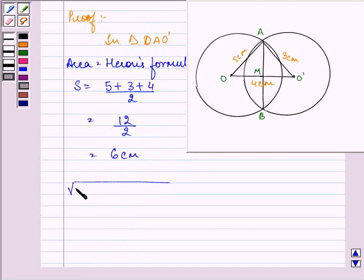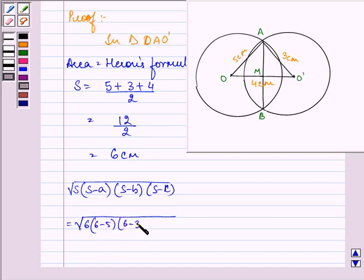Area can be found out by using the formula root of S times S minus A times S minus B times S minus C, where S we have found out to be 6 and A, B, C are the sides of this triangle. So 6 minus 5, 6 minus 3, and 6 minus 4.